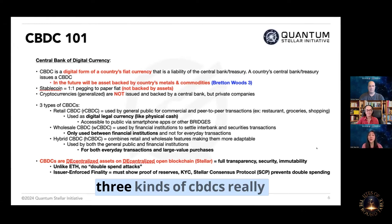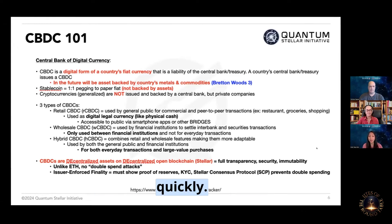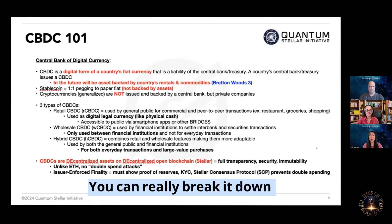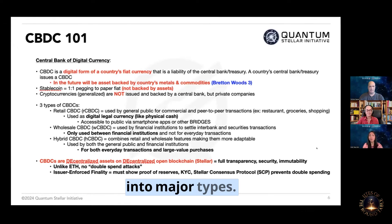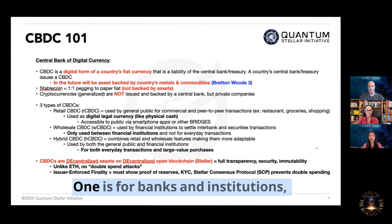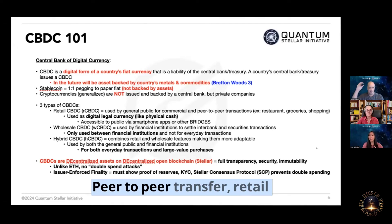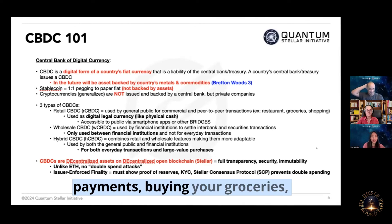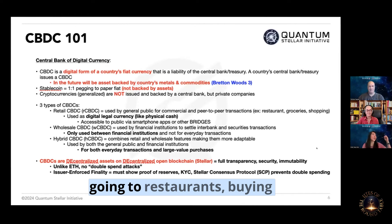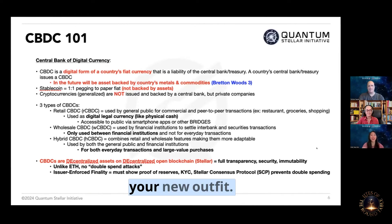I'm going to go over the three kinds of CBDCs really quickly. You can really break it down into major types: one is for banks and institutions, and one is for everything else — peer-to-peer transfer, retail payments, buying your groceries, going to restaurants, buying your new outfit.